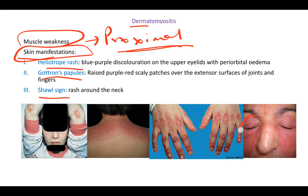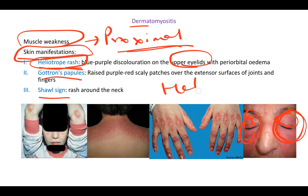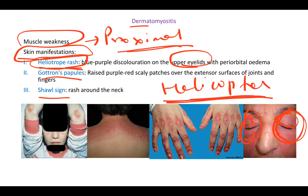Heliotrope rash is a purple-colored discoloration above the eyelids along with periorbital swelling and edema. You can see this discoloration and edema around the eyes. To remember it, think of a helicopter — you watch it fly above your head with your eyes, so heliotrope is associated with the upper eyelids.